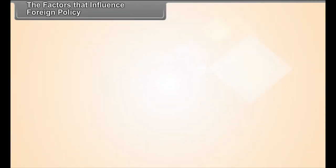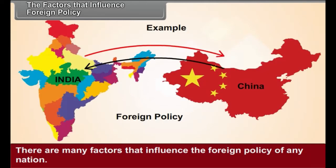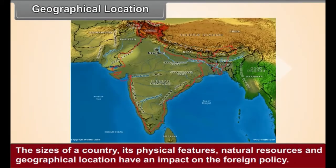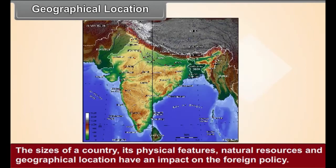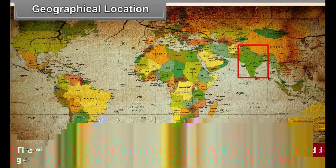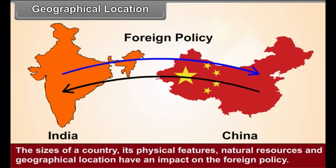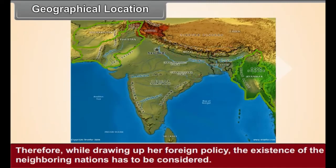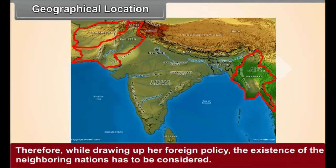The Factors That Influence Foreign Policy. There are many factors that influence the foreign policy of any nation. Here, we would learn about some of the factors. Geographical Location: The size of a country, its physical features, natural resources, and geographical location have an impact on the foreign policy. The characteristic geographical location of India has given her many neighboring nations. Therefore, while drawing up her foreign policy, the existence of the neighboring nations has to be considered.